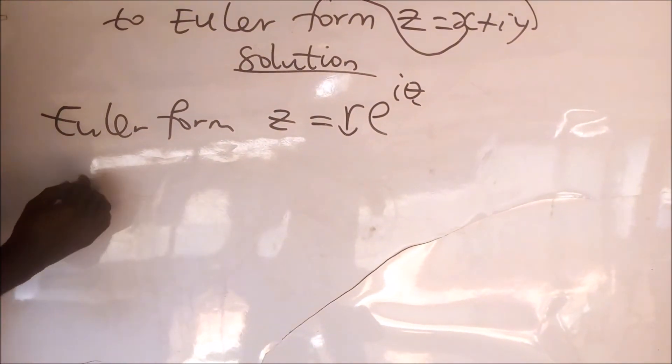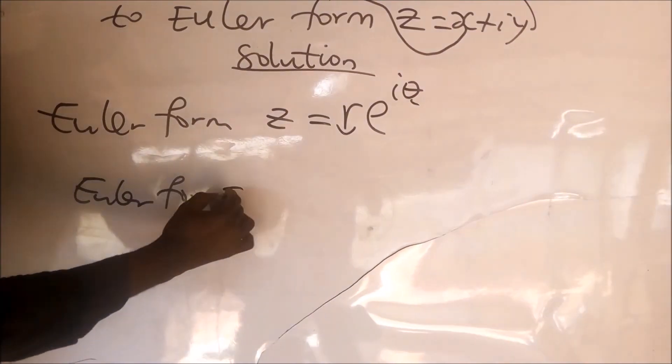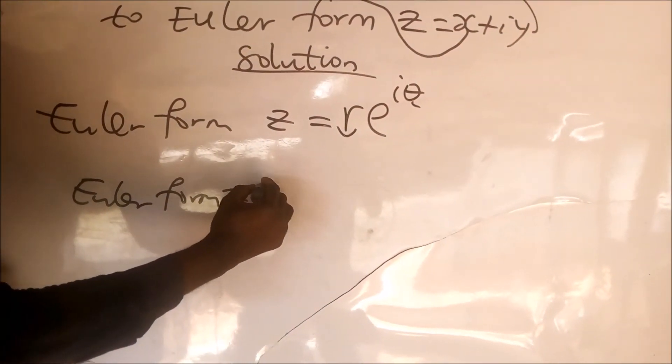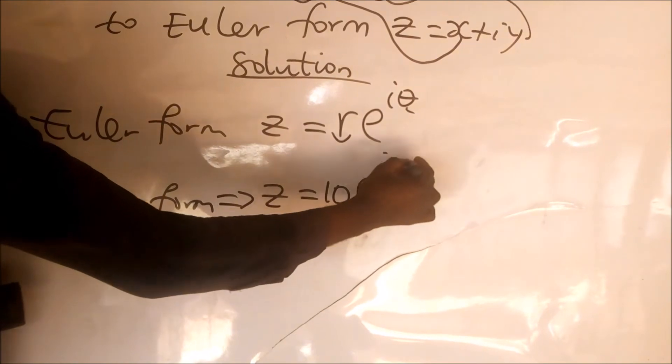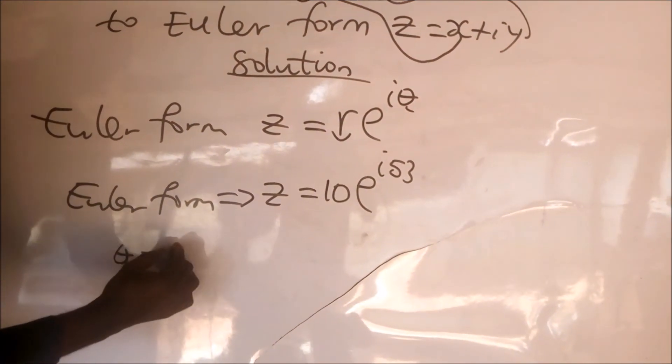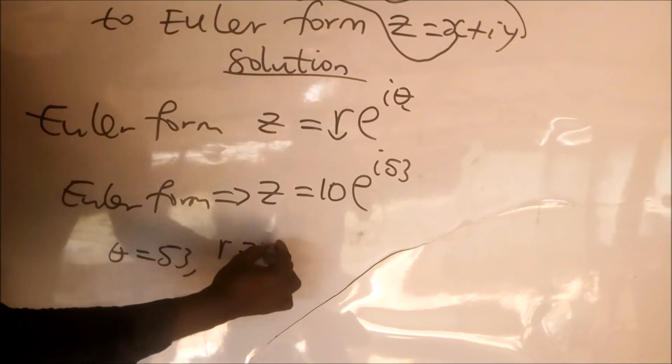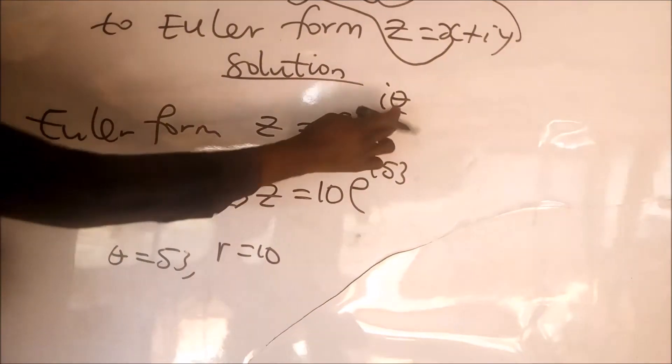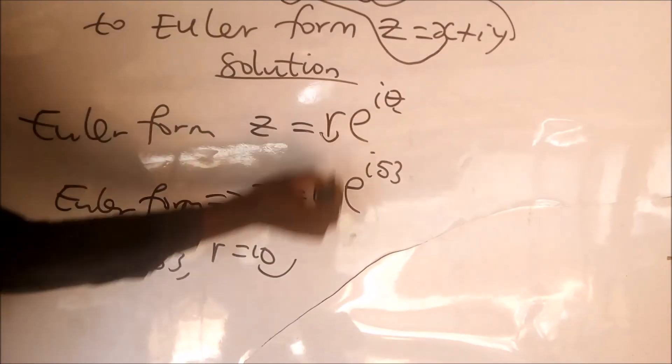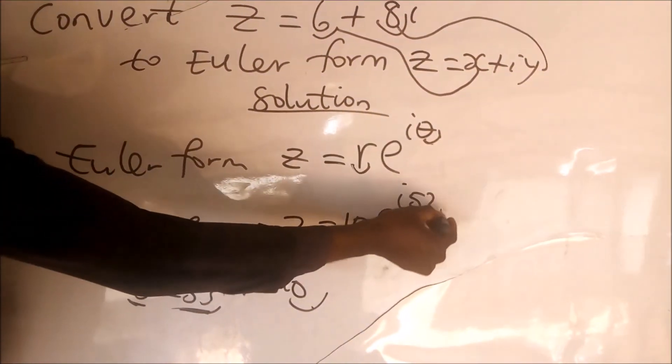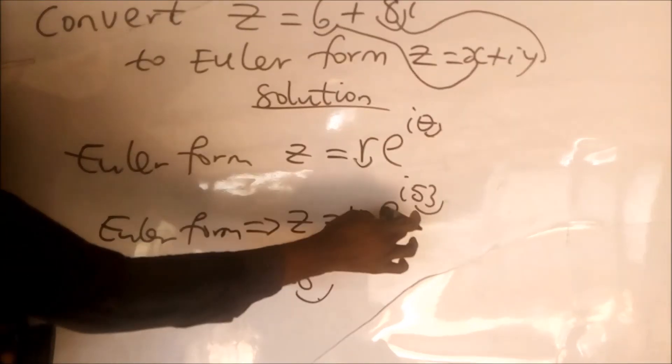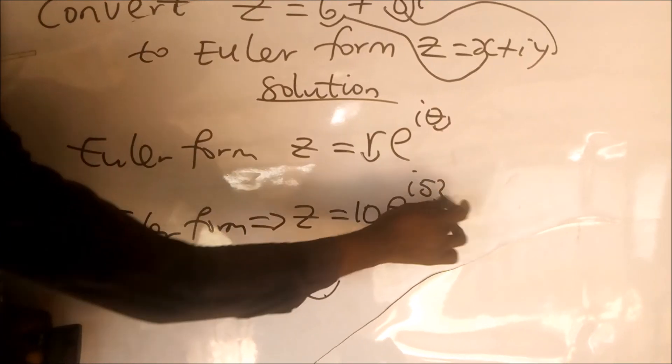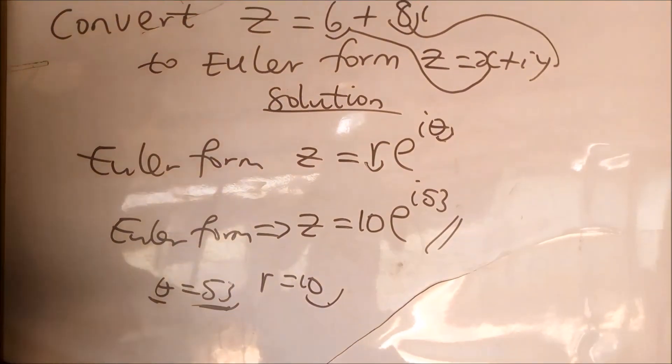Now we have that the Euler form is going to be z equal to 10 exponential i 53, where theta is equal to 53 and r is equal to 10. When we compare this to this, you see that this 10 is just this r, they are on the same position. This 53 is for theta, where we have theta here, we are going to replace it with this 53. So the Euler form is now 10 exponential i 53. This is the Euler form of this complex number.